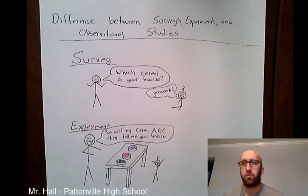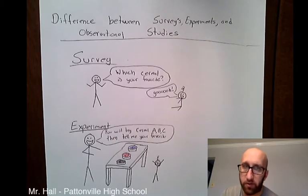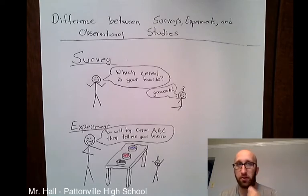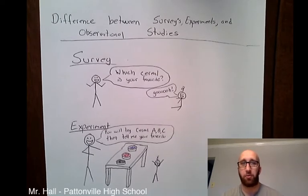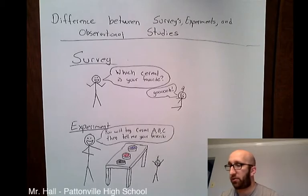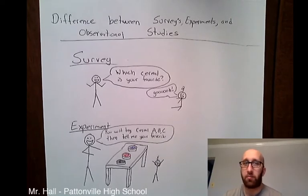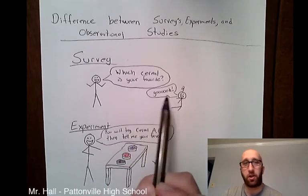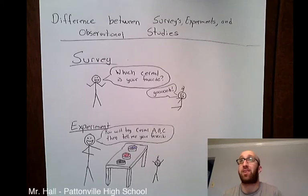I want to chat about the differences between surveys, experiments, and observational studies. I have some illustrations to show the key differences between the three. The example I'm using involves two stick figures — one is me and one is my seven-month-old son. A survey is simply asking a question to someone. So a survey would be me asking my son which cereal is his favorite — you're just asking a question to a sample and getting a response back.